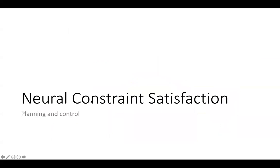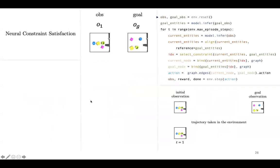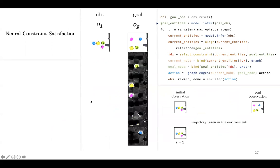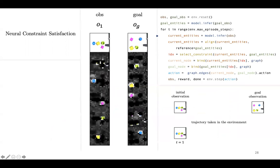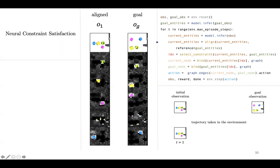Let us now discuss the control component of our method. We first are given an initial observation and a goal. We use the world model to infer entity representations as goal constraints from the goal observation and the current entities from the current observation. The entities of these entities are not aligned, so we use the Hungarian algorithm to align the entities of the entity representations from the current observation with those of the goal observation.